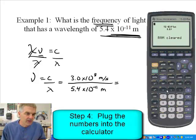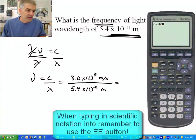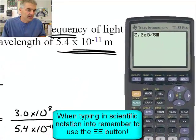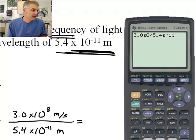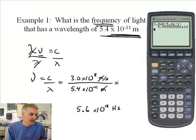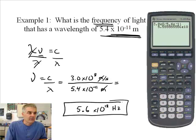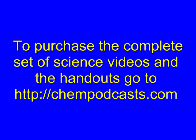I'm going to divide those. I've got my calculator over here. When I divide these, remember you're going to use this double E button. I'm going to say 3.0 second function double E, 8 divided by 5.4 second function double E, negative 11. I get the answer of 5.6 times 10 to the 18th, and that'll be in Hertz. By the way, the meters cancel, and it's actually just one over seconds. It's waves per second, like we talked about in the little video clip. Make sure that you're using the double E button on your calculator when you're doing all this.